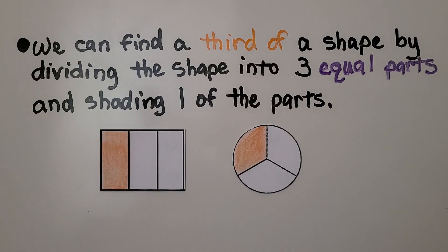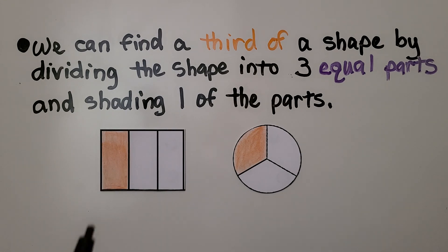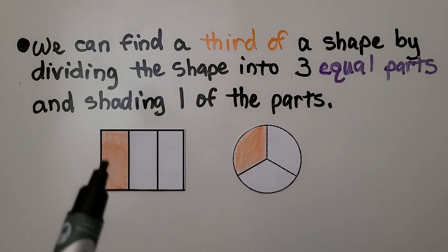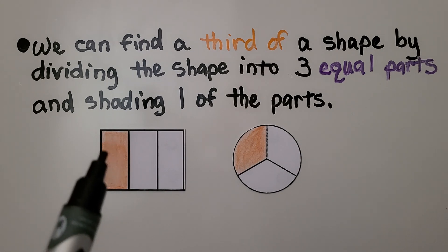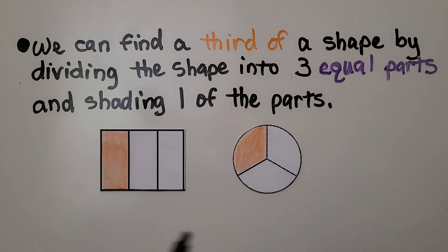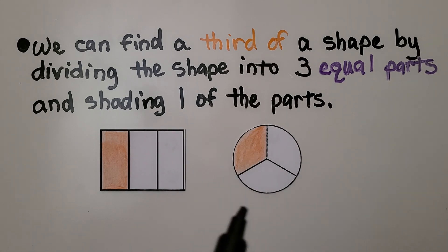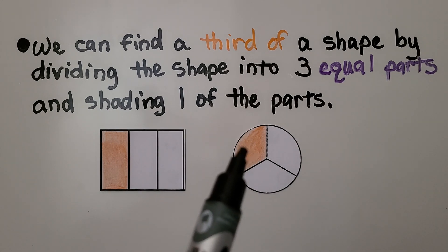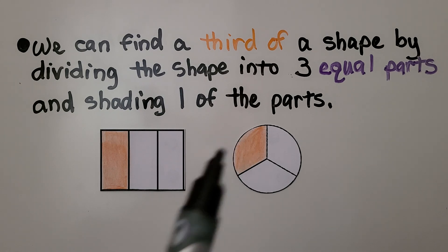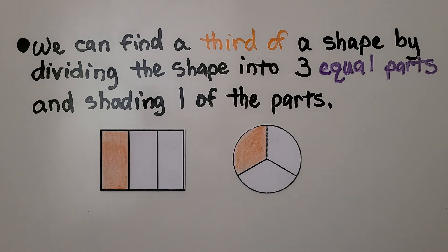We can find a third of a shape by dividing the shape into three equal parts and shading one of the parts. That's a third of the rectangle. We divide the circle into three equal parts and shade one of the parts. That's a third of the circle.